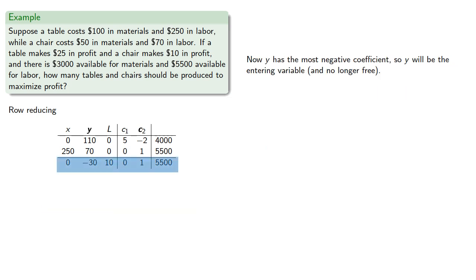Now y has the most negative coefficient, so y will be the entering variable and no longer a free variable. The row quotients are calculated.